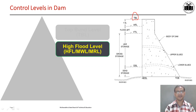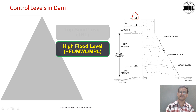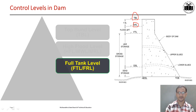Another level is HFL, MWL, or MRL — maximum water level, maximum reservoir level, or high flood level. It is the maximum reduced level up to which water can rise in the reservoir, and it depends on flood level and full tank level. Here you can see the high flood level of the dam. Another level is FTL or FRL — full tank level or full reservoir level. Water in the reservoir is stored up to a level known as FTL or FRL; usually the crest of the spillway is kept at this level. Here you can see the full tank level of the dam.